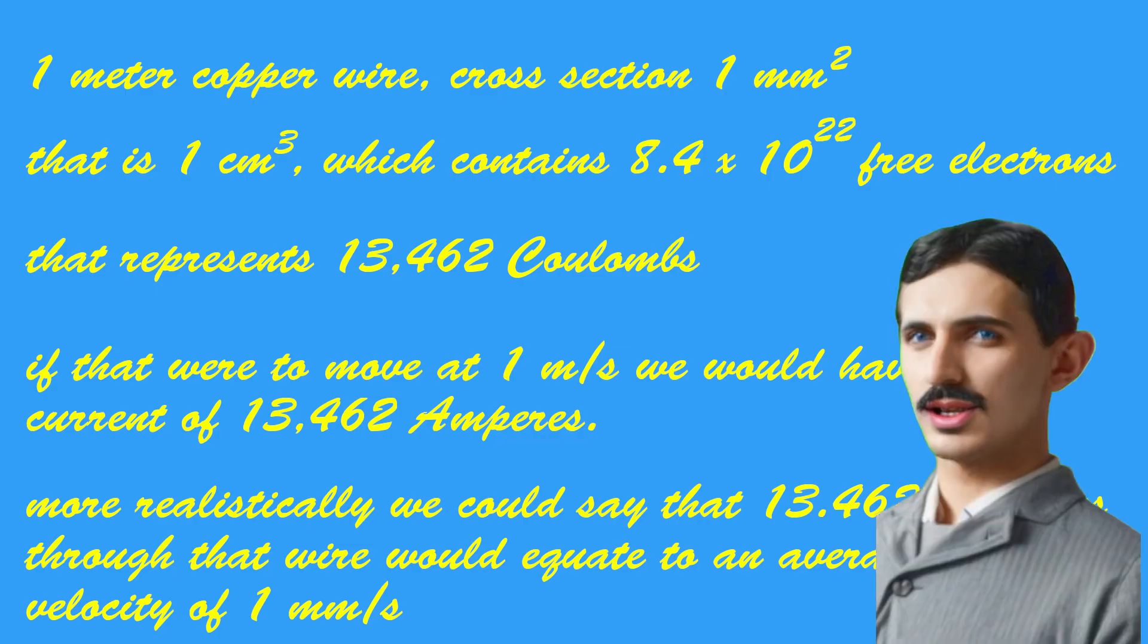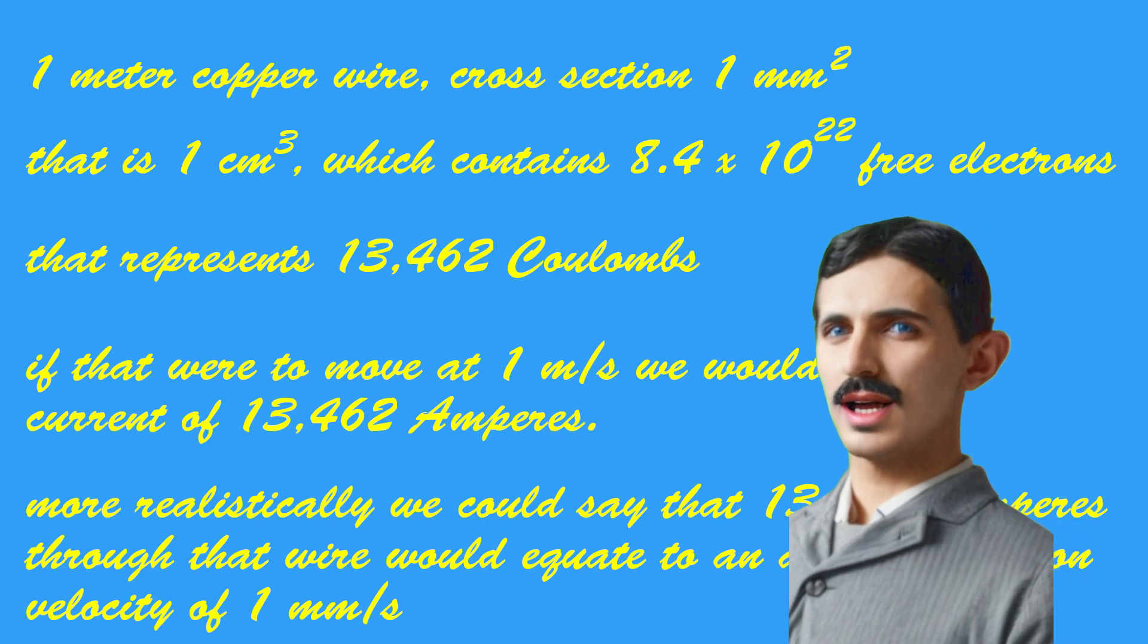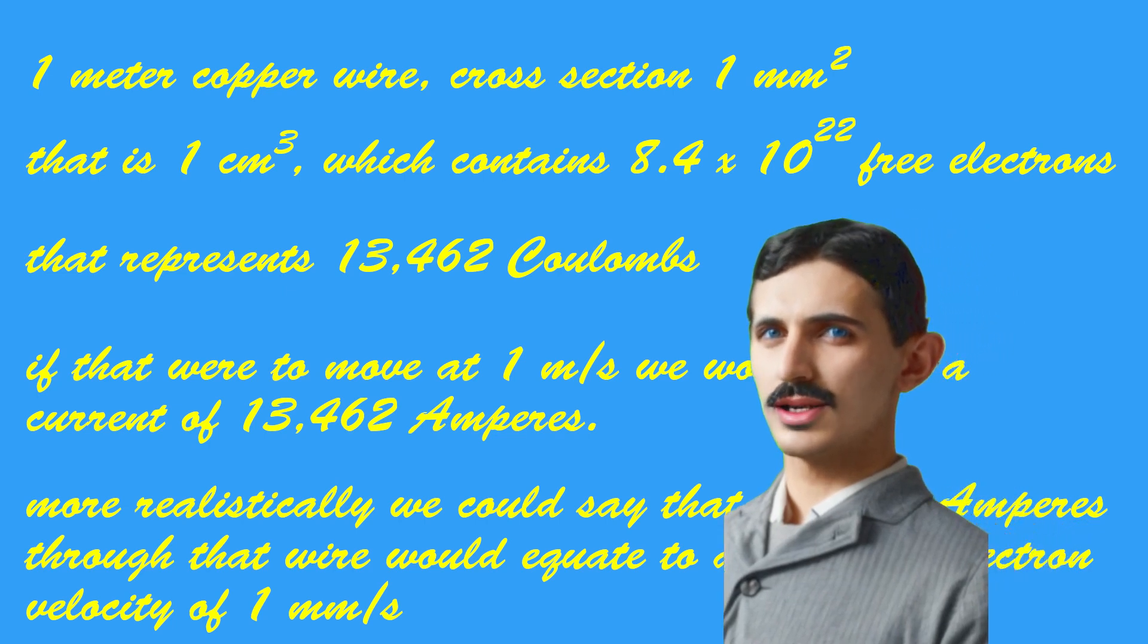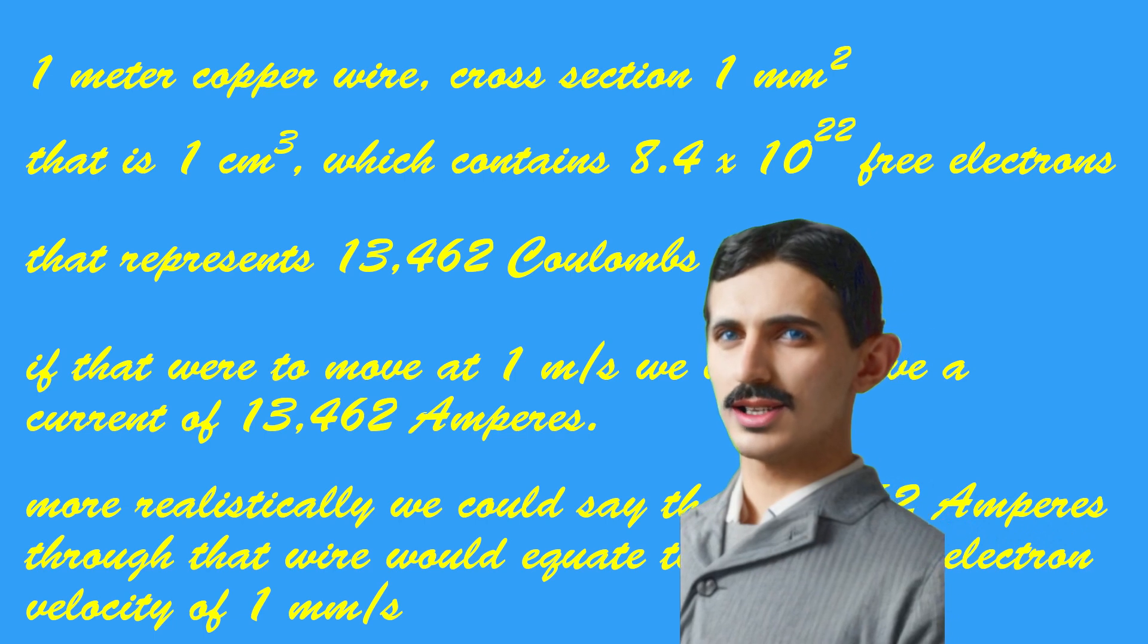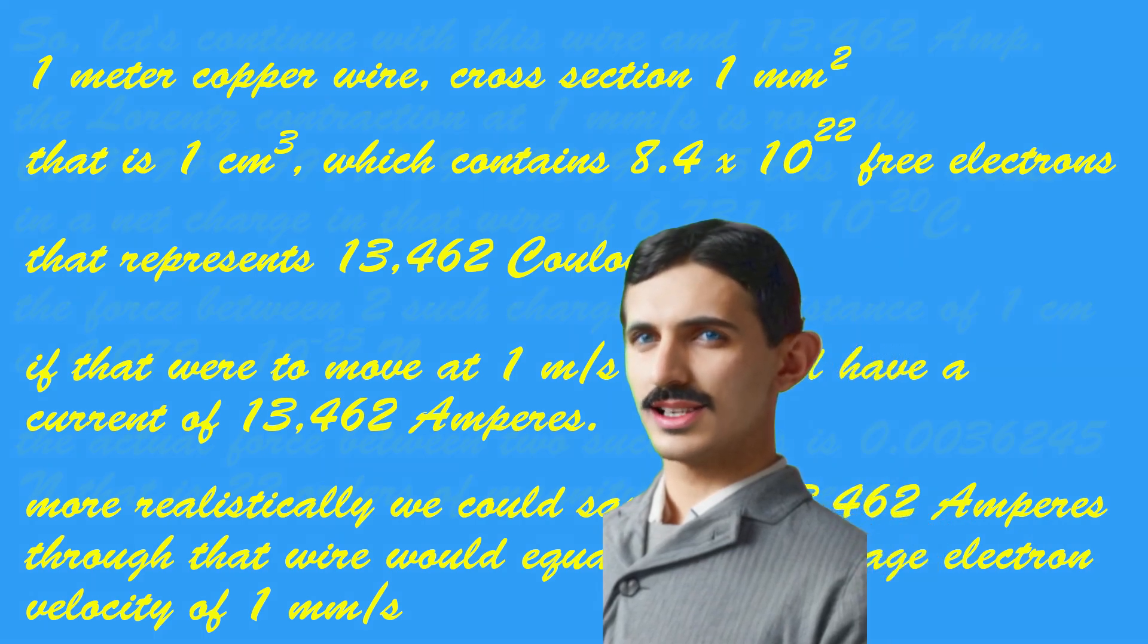Sounds all cool, so let's add some numbers to it. If we run about 13.5 amperes through a wire with a cross-section of one square millimeter, we can calculate that the average electron drift velocity is one millimeter per second.